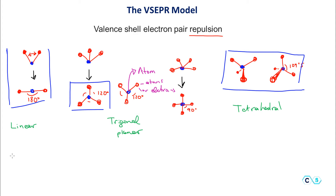For example, methane has the formula CH4. The central atom is carbon, based on the Lewis structure. Carbon has four hydrogens connected to it. Because there are four units around the central atom, this is a tetrahedral geometry.